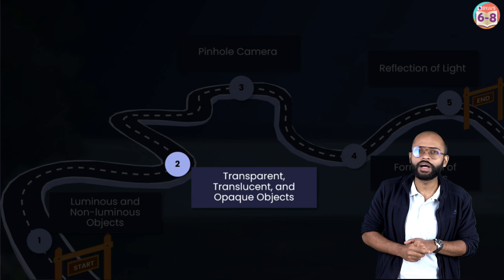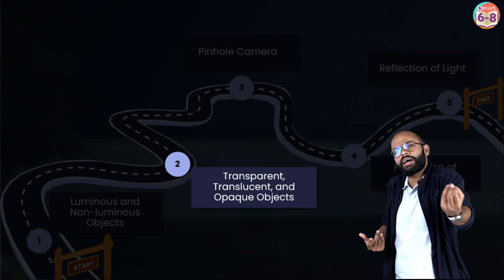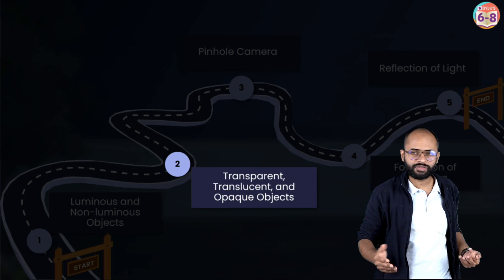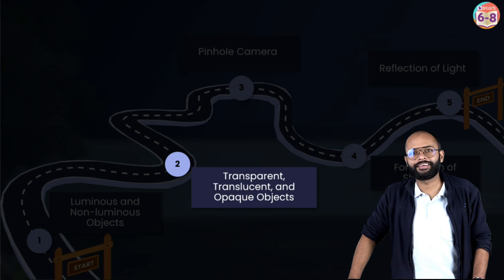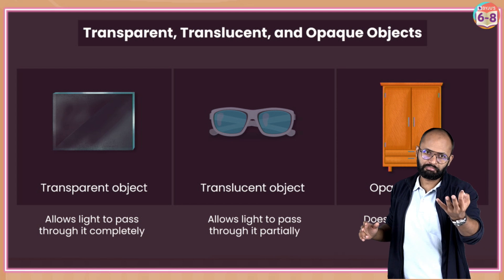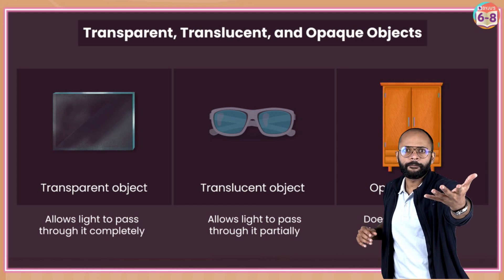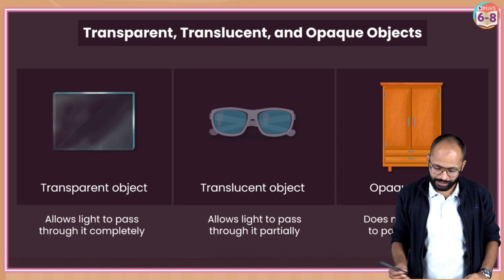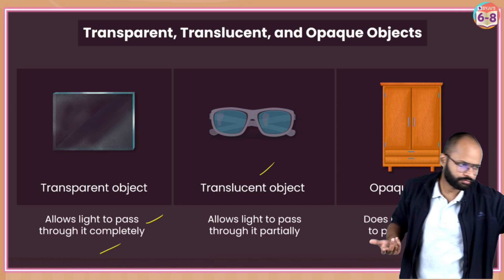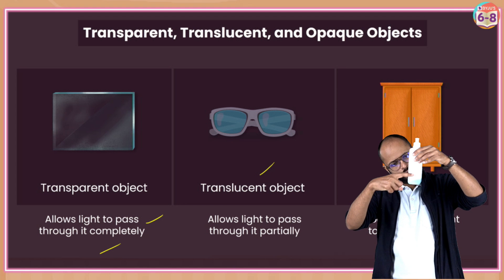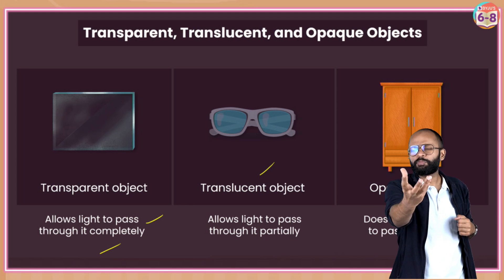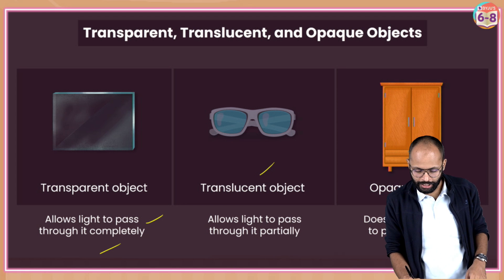Second milestone: types of objects in terms of how they behave with light - do they allow light to pass through them or not? Depending on this, we have classified three types of objects. Transparent objects allow complete light to pass through them, like glass or air between you and me. Translucent objects - like water paper or this bottle - allow light to pass through them partially. Those are called translucent objects.